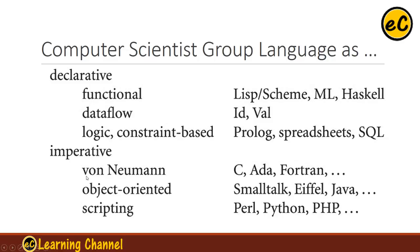Imperative languages include manual machine programming languages, including C, Ada, Fortran, Pascal, and JavaScript, and many other languages. Object-oriented programming languages include Smalltalk, Eiffel, and Java. Scripting languages include Perl, Python, and PHP.